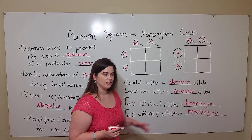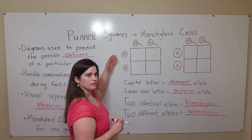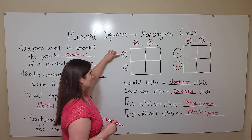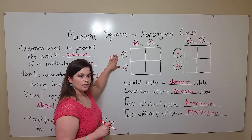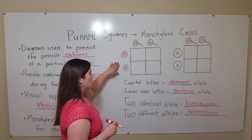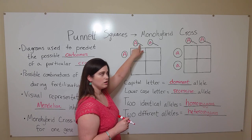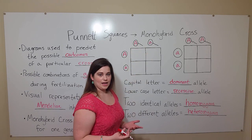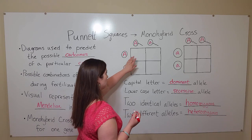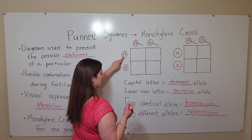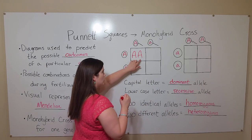Now that we understand the notation, let's get to the Punnett squares for monohybrid crosses. Here we have a mother who is heterozygous — she has a dominant allele and a recessive allele, meaning she can give one of those alleles to any of her offspring. We have a father who is also heterozygous, so his sperm can contain either the dominant allele or the recessive allele. In the Punnett square, we write the possible outcomes for the offspring. For example, one offspring can get a dominant allele from the mother and a dominant allele from the father, making them homozygous dominant.